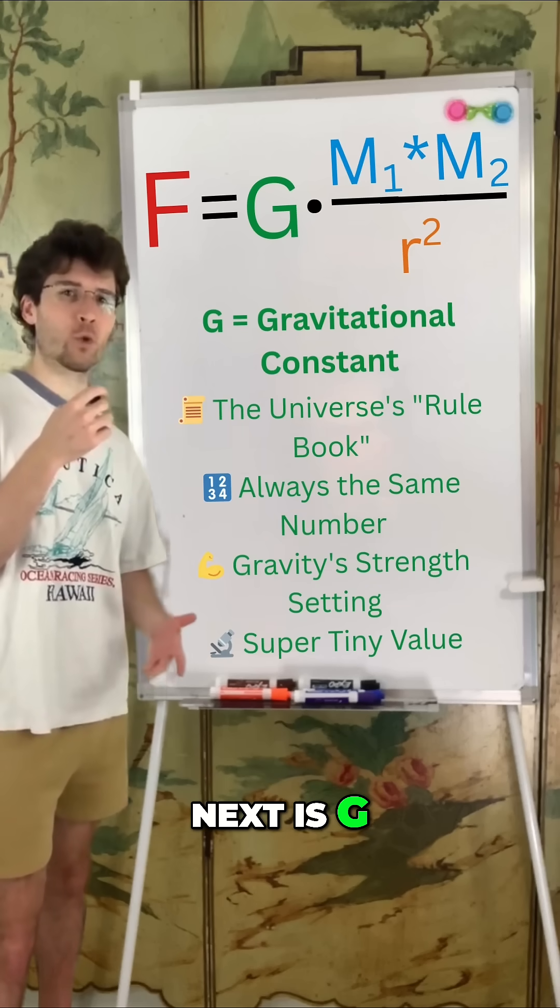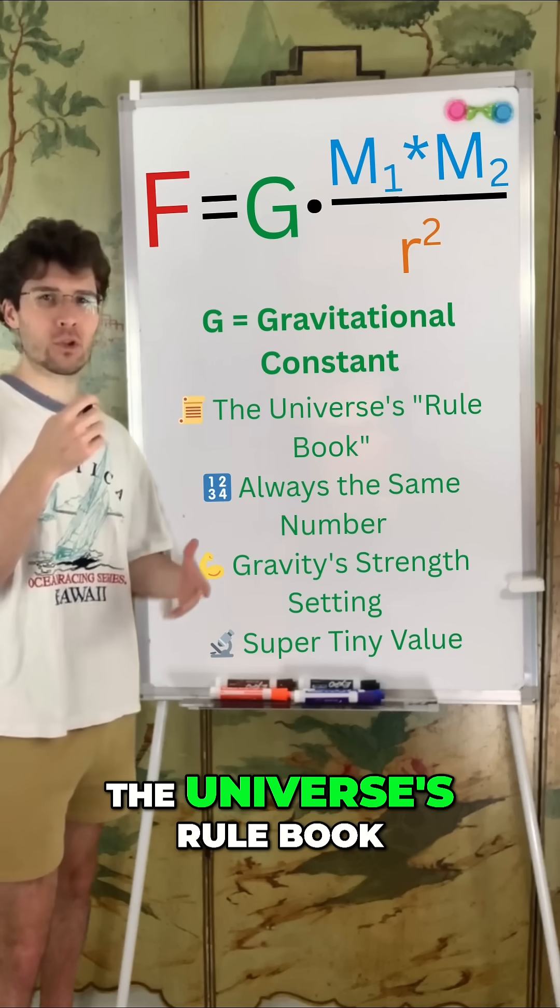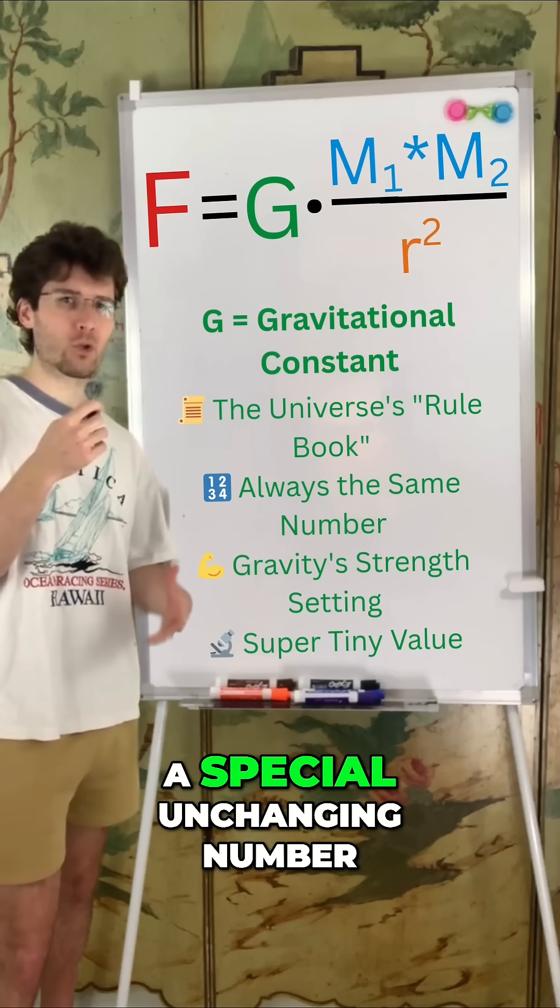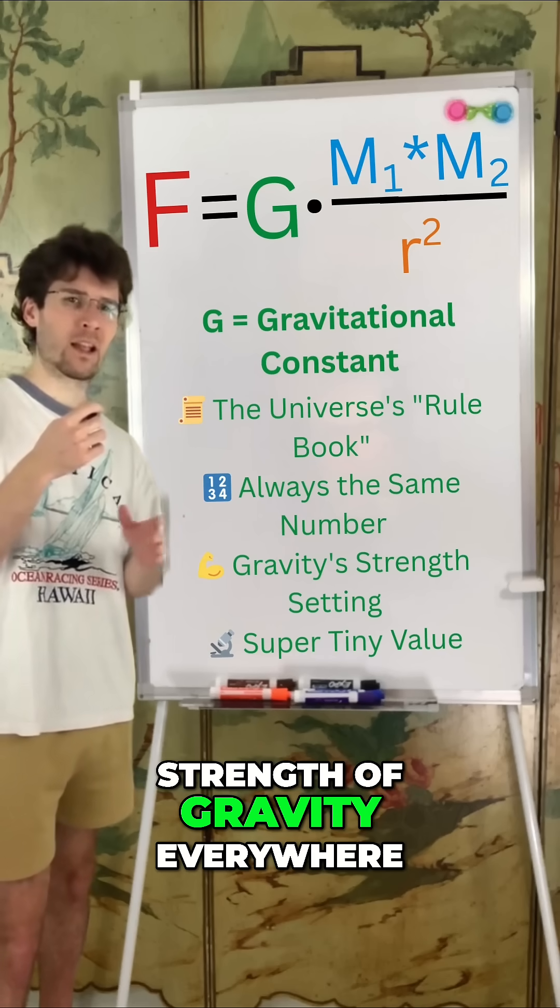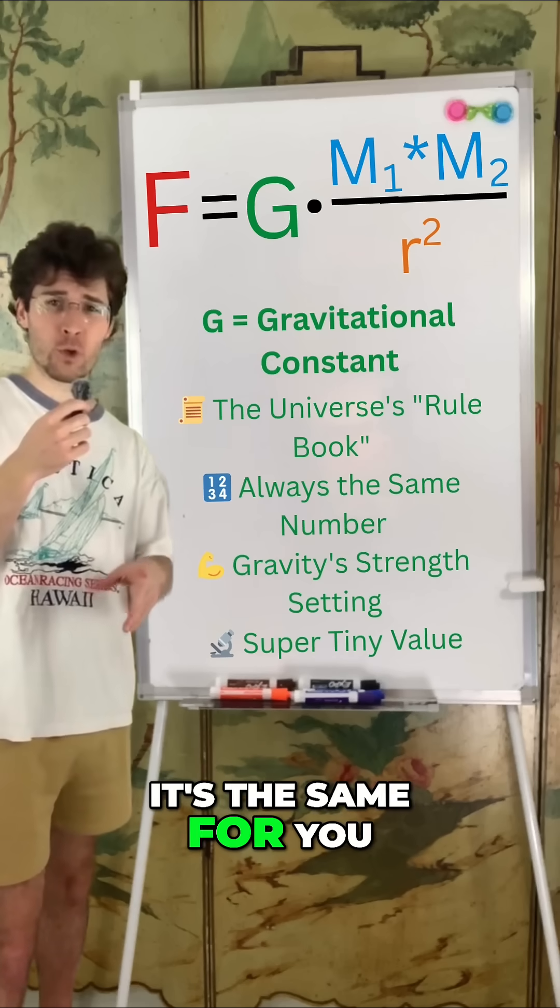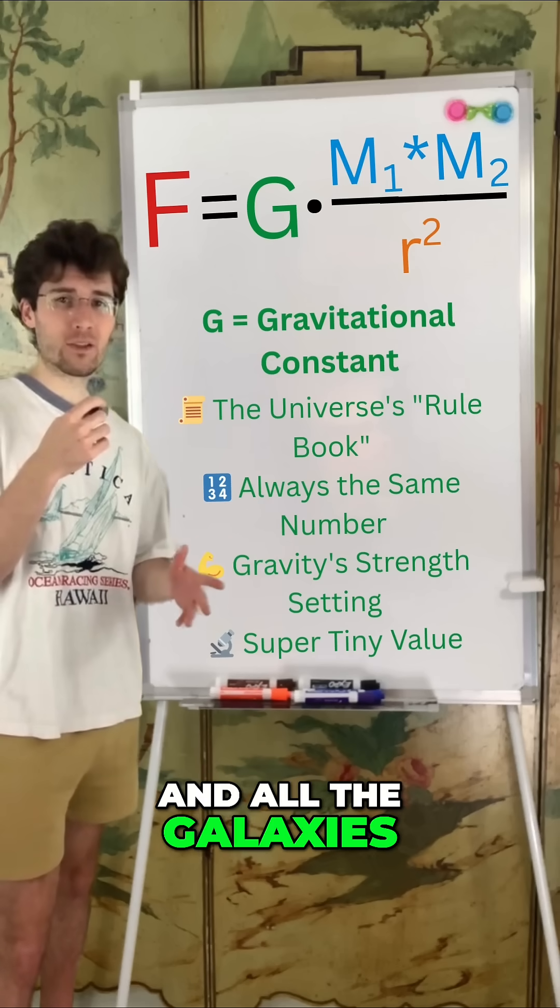Next is G, the gravitational constant. Think of this as the universe's rulebook, a special unchanging number that sets the exact strength of gravity everywhere for everything. It's the same for you, the planets, and all the galaxies.